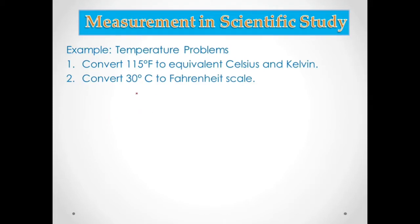Our conversion for Fahrenheit: from degrees Celsius to Fahrenheit, you are actually increasing the value. The formula becomes 9 over 5 times degrees Celsius plus 32.